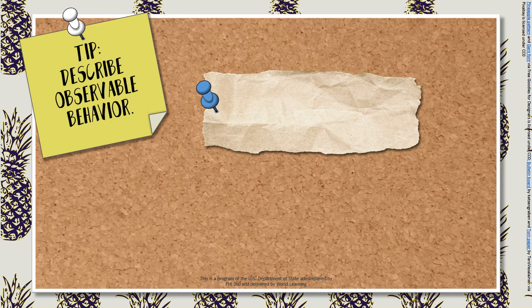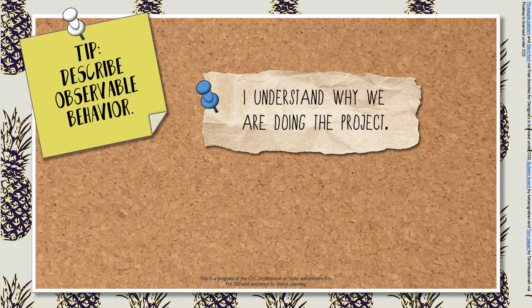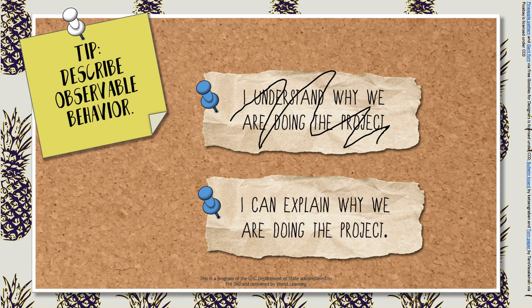Make sure you describe observable behavior. For example, you can observe a student explaining something, but you cannot directly observe a student's comprehension of something. For this item, I understand why we are doing the project — what could the teacher observe to know that this is true? A better description might be: I can explain why we are doing the project.